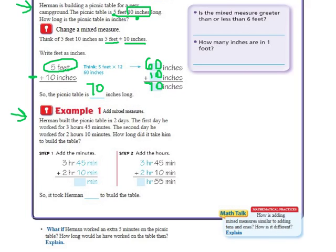Okay, here's another one. Herman built the picnic table in two days. The first day, he worked for 3 hours and 45 minutes. The second day, he worked for 2 hours and 10 minutes. How long did it take him to build the table? So we're going to have to add. We're adding 3 hours and 45 minutes to 2 hours and 10 minutes. It tells us here, just like in normal addition, we're going to add the minutes first.